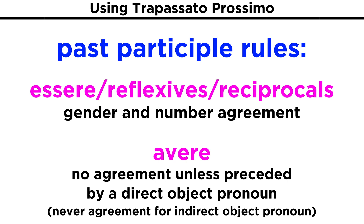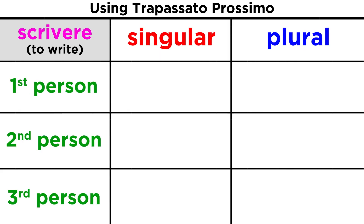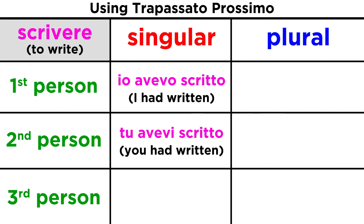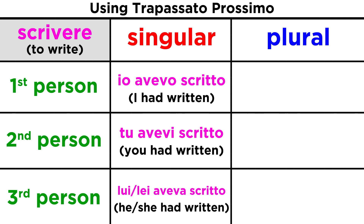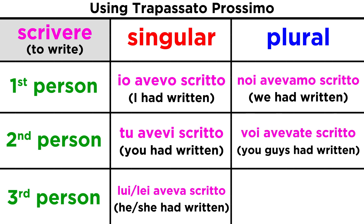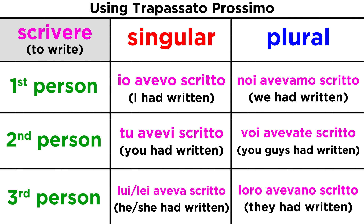Let's apply this to three verbs, going through the conjugation for each one. The first is scrivere, a transitive verb taking avere. Io avevo scritto, tu avevi scritto, lui o lei aveva scritto, noi avevamo scritto, voi avevate scritto, loro avevano scritto.